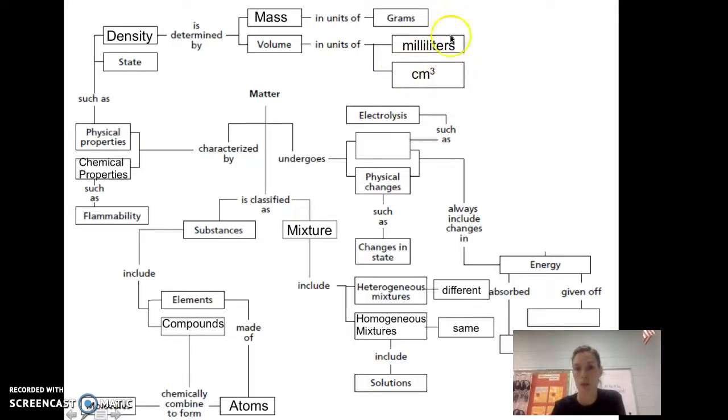Matter undergoes physical and chemical changes. That's what we talked about today in today's notes. Physical changes are things like changes in state, and I told you that's the one that always gets confused. Changes of state - evaporation, condensation, vaporization including boiling - all of those are going to be changes in state and so they're physical changes. Whereas chemical changes, one you do need to know for your test is electrolysis, that we went over.